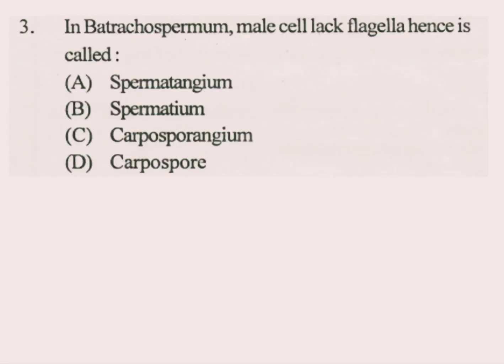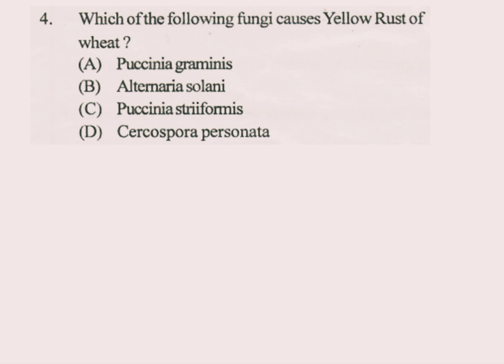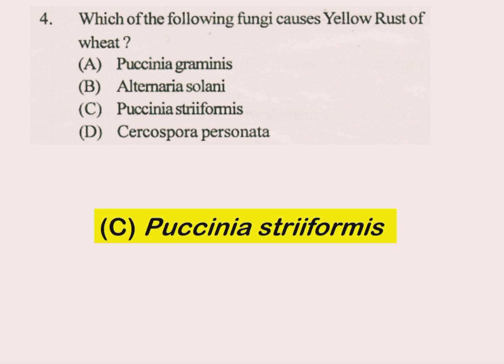Question number 3. In Batrachospermum, male cells lack flagella, hence are called Spermatium. Question number 4. Which of the following fungi causes yellow rust of wheat? The answer is C part: Puccinia striiformis.